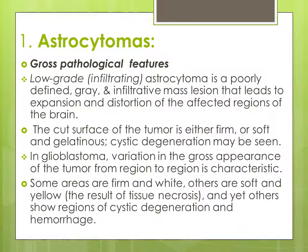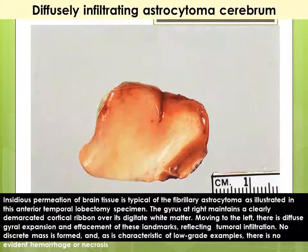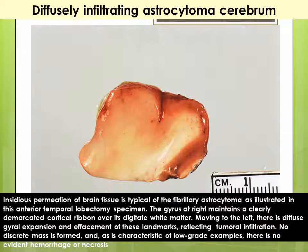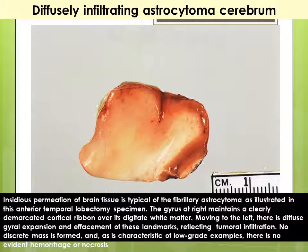Yellow areas indicate necrosis; other regions show cystic degeneration and hemorrhage. This gross cut of an excisional biopsy shows the insidious permeation of brain tissue typically seen in fibrillary astrocytoma, in this anterior temporal lobectomy specimen. Gyri are maintained clearly on the cortical ribbons on the right side, while moving to the left there is diffuse gyral expansion and effacement of landmarks due to tumor infiltration. No discrete mass is formed, consistent with infiltrative growth with no evidence of hemorrhage or necrosis.